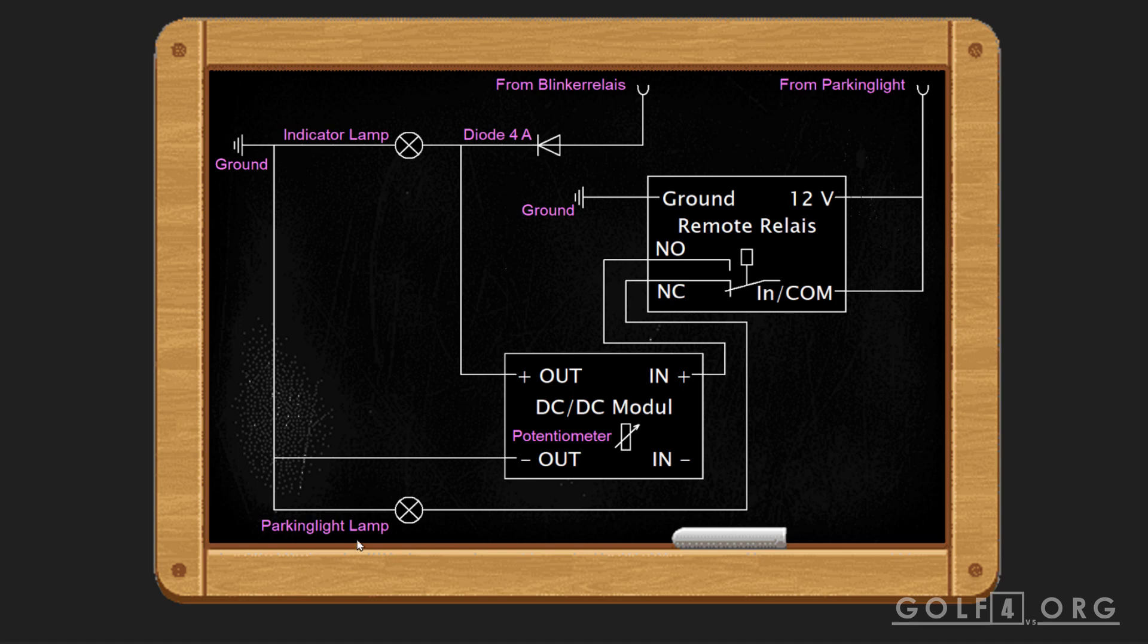But what if you want your parking light to always stay on and the relay just to switch the indicator lamp on or off? That's easy. Then don't cut this line to the parking light. Instead, just connect the COM and the 12-volt line to it. You do not have to connect anything to NC because this line goes here and the relay just switches COM to normally open or to nothing because NC is not connected.